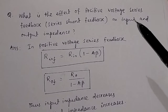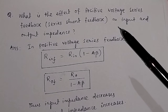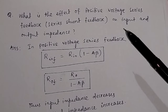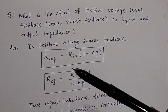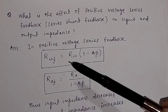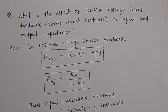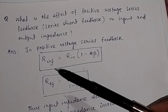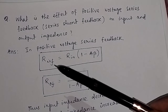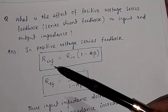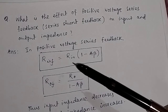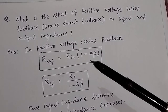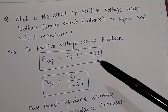Now the question arises: what is the effect of positive voltage series feedback? In positive voltage series feedback, the input impedance with feedback equals the input impedance multiplied by (1 − Aβ). From this equation you can find out the effect.